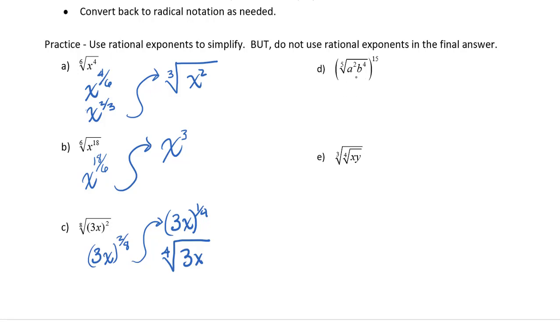Now let's look at part d. We have the fifth root of a squared, b to the fourth, all raised to the fifteen.